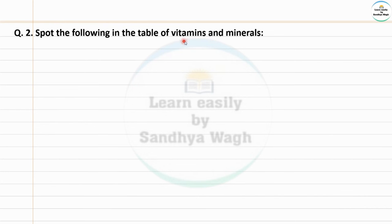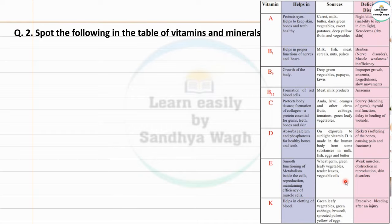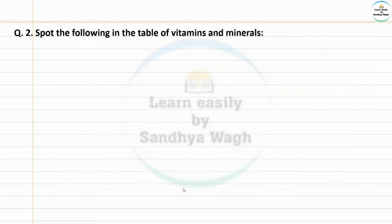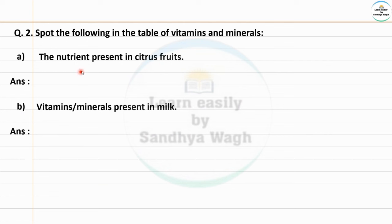Question 2 — Spot the following in the table of vitamins and minerals. You can find the vitamins and minerals tables in the textbook. If you have any questions about these tables, you will be able to find the answers. First question: the nutrients present in citrus fruits — citrus fruits means limbu-vargiyan fruits (lemon-type fruits).